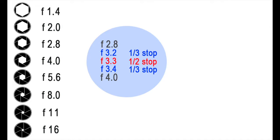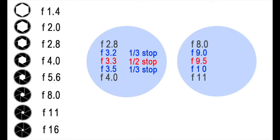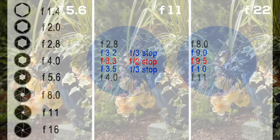Depending on your camera, you may be able to program it for half-stops as well as third-stops. If you do that, you'll see three numbers between each of the major stops — a stop, a third stop, a half-stop, a two-third stop, and then your next full stop. I set my camera to use half-stops but not the third stops.